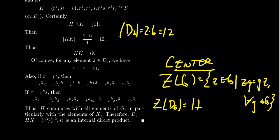So we've verified all the conditions: the intersection of H and K is trivial, their product is the whole group, and they centralize each other. Therefore, D6 is the internal direct product of its center and D3.